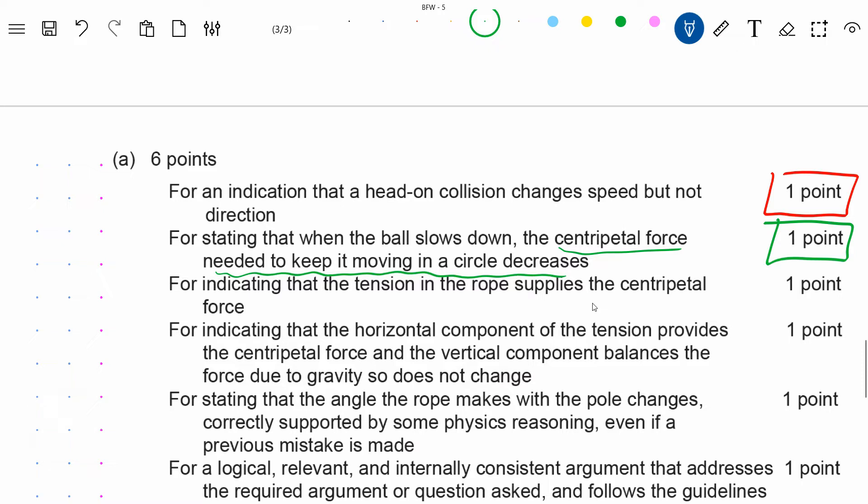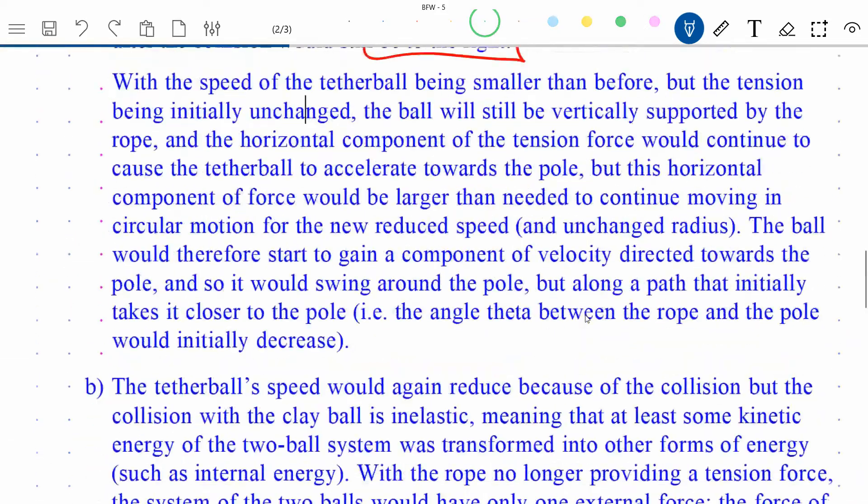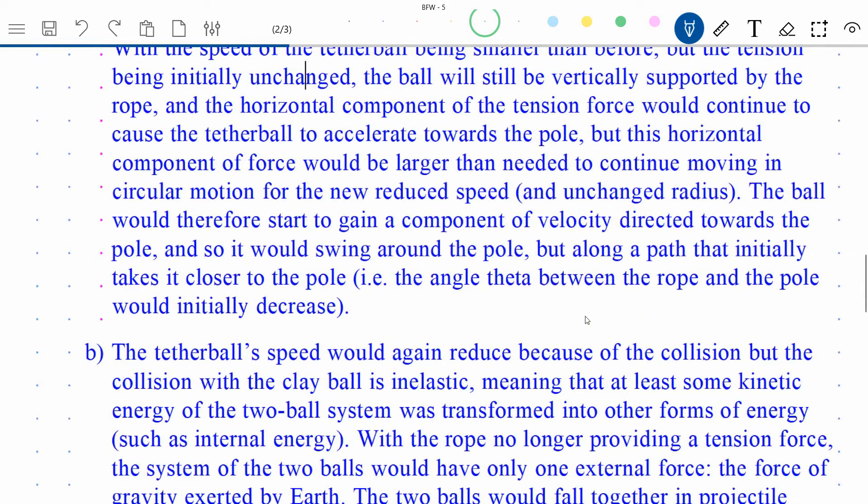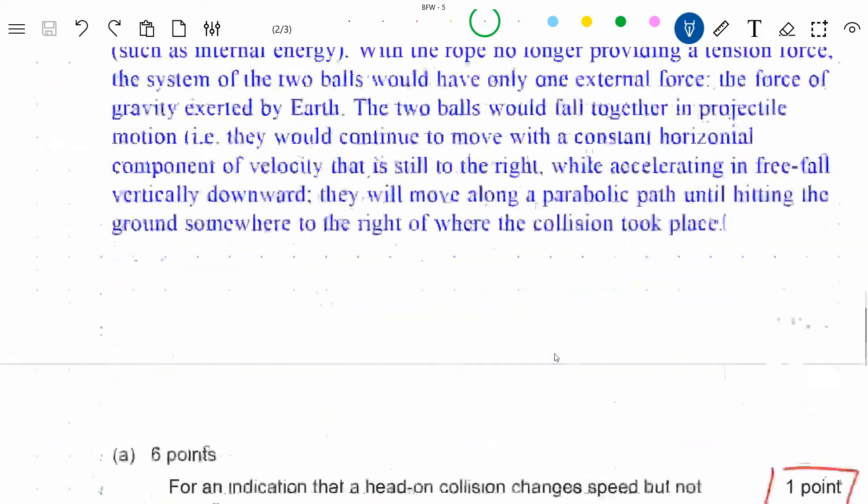Okay, this second point for stating that when the ball slows down, the centripetal force needed to keep it moving in a circle decreases. So again, that's that equation. In effect, a centripetal equal to v squared over r, and of course if you multiply both sides by m, you would get the net force, the centripetal force. So m v squared over r, if you will. So with a reduction in speed, the acceleration would be smaller, so if that force is still the same as before, it is not going to work out. It's not going to maintain a constant circular motion, a uniform circular motion. And I do say that in here somewhere where I say that this horizontal component of force would be larger than needed to continue moving in a circular motion for the new reduced speed and unchanged radius. Okay, so that should about do it right there. The fact is that uniform circular motion will not continue.